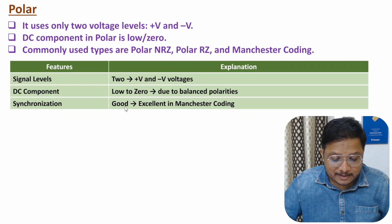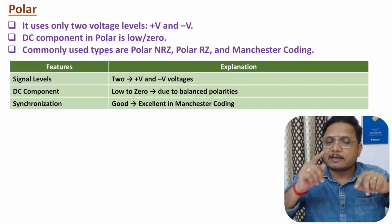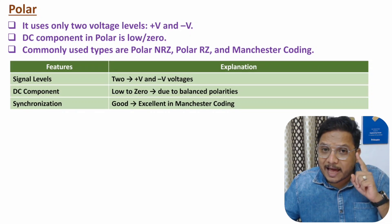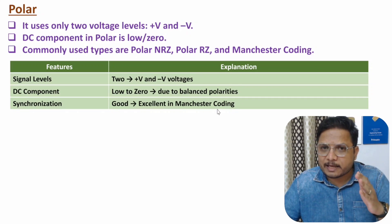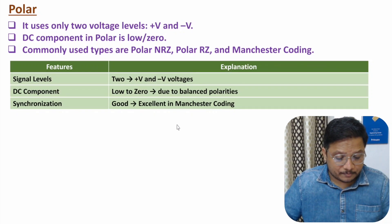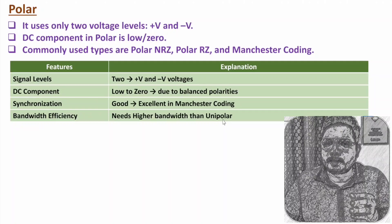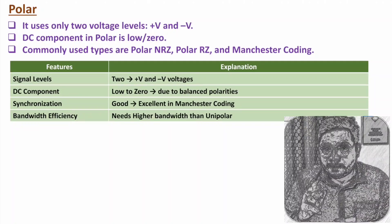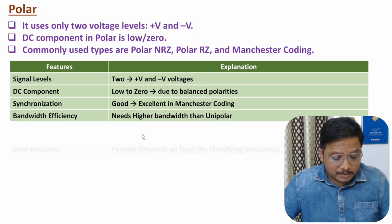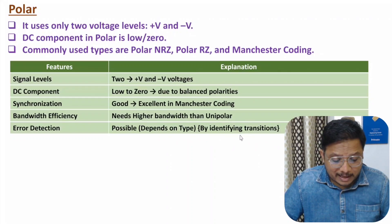If you talk about synchronization, that is good in polar. The reason is there is transition of voltage as per ones and zeros, and it will be excellent in the case of Manchester coding. If you talk about bandwidth efficiency, you need higher bandwidth compared to unipolar because we need more pulses per bit. Error detection is also possible — it depends on the type of coding, and by identifying transitions one can have error detection.